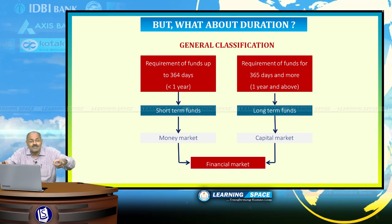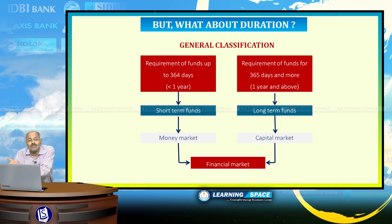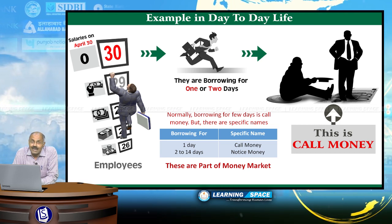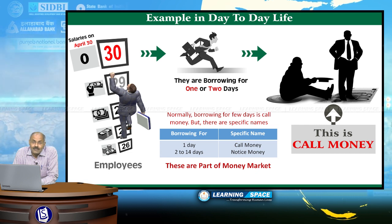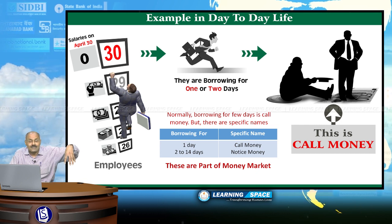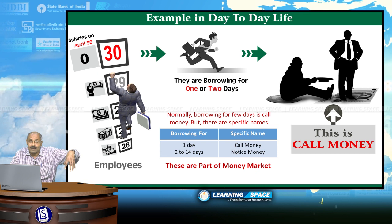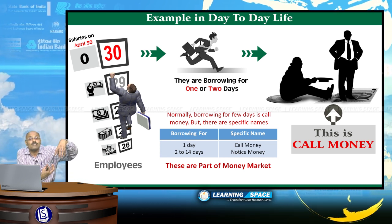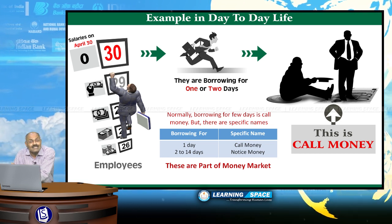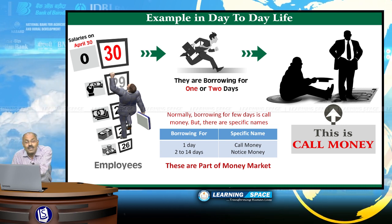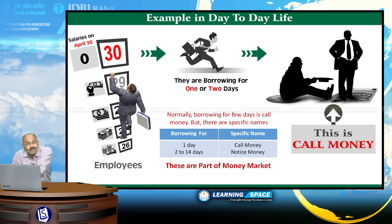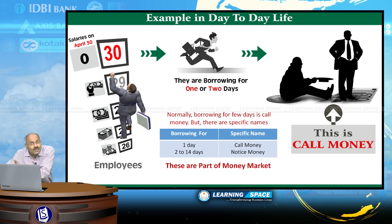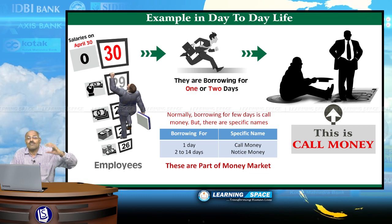Before going into detail, let me give a few day-to-day life examples. Assume a government employee needs some money on the 29th of a month, and will get salary on the 30th. For that one day, he will borrow money from his friend. This is a classic example of call money — if somebody is borrowing for a few days, that is categorized as call money.